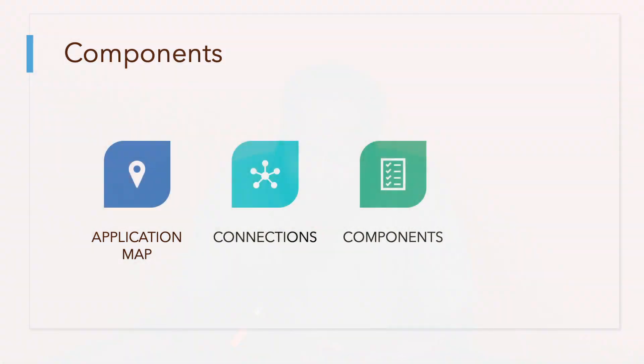The third important element of a mobile application storyboard is the component list. Components are the building blocks of your application. This could range from inbuilt pages to any external assets or pages that you will be linking to. When working on components, make sure that they follow the same design language as the rest of the application and have a logical flow from a content perspective. If you're deploying third-party assets, make sure you have the appropriate permissions from the authors and that they observe the same design language as the rest of your application.